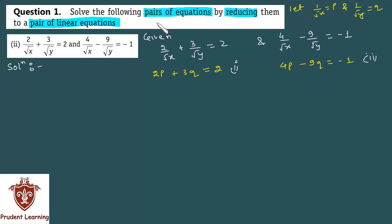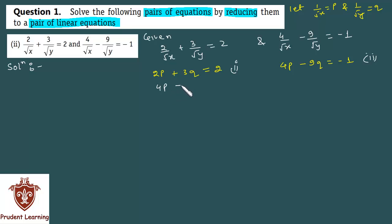Since no specific method is mentioned in the question, it is free choice — you can solve using any algebraic method. I will also prefer the elimination method. The second equation is 4p minus 9q is equal to minus 1.